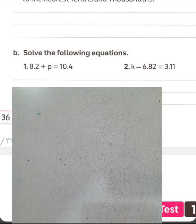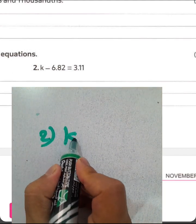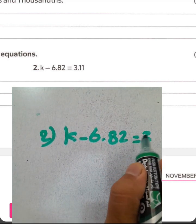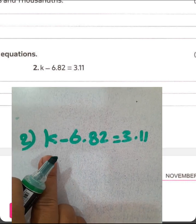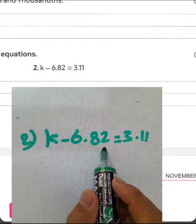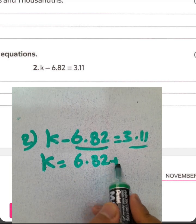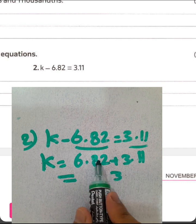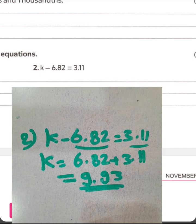Letter P, or number 2, K subtract by 6.82 will be 3.11. We call here K the minuend, and subtract. To find the minuend, you must add subtrahend to the difference. In K, equals 6.82 plus 3.11. 1 plus 2 equals 3, 1 plus 8 equals 9, 3 plus 6 equals 9, then K will be 9.93.